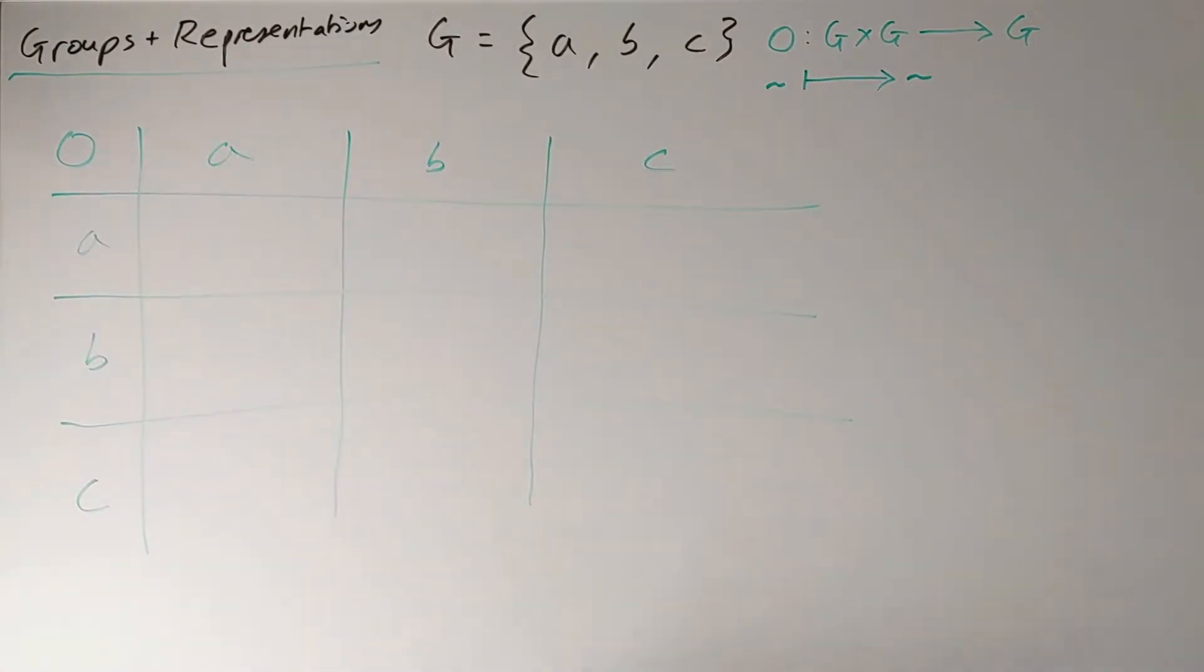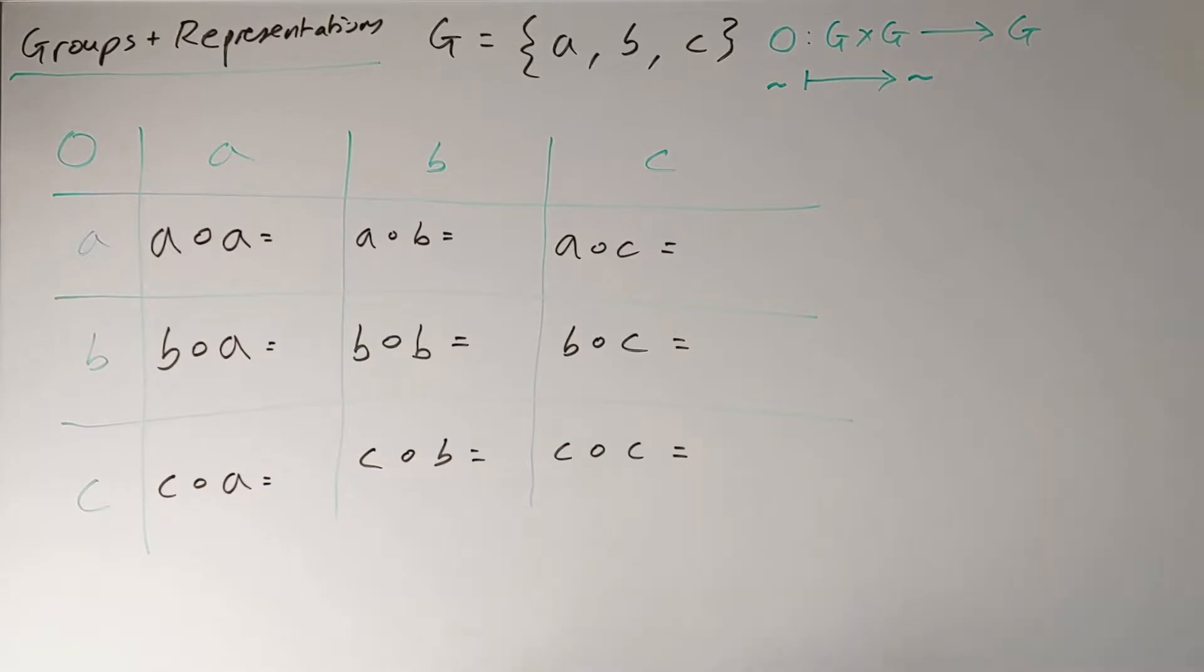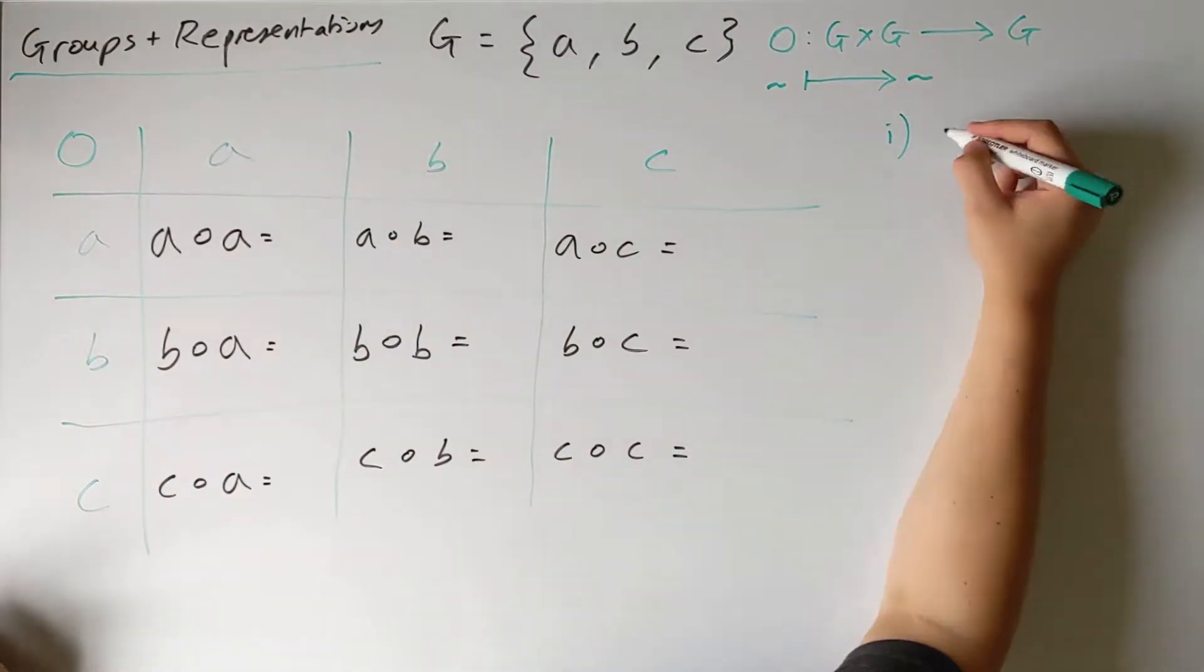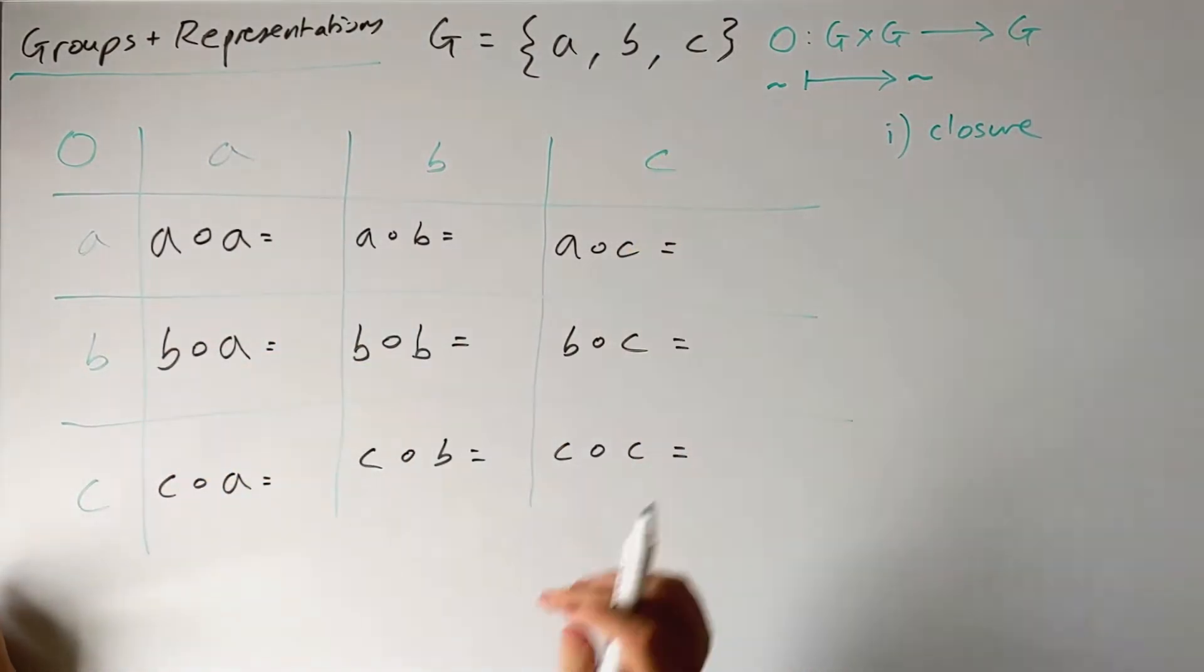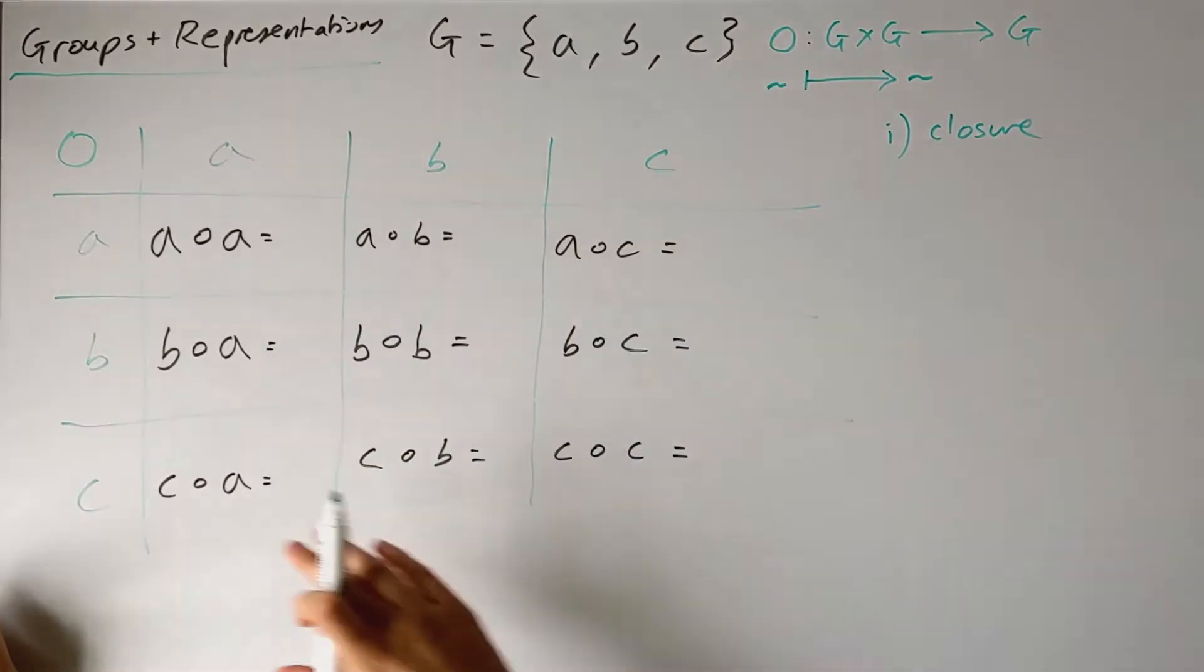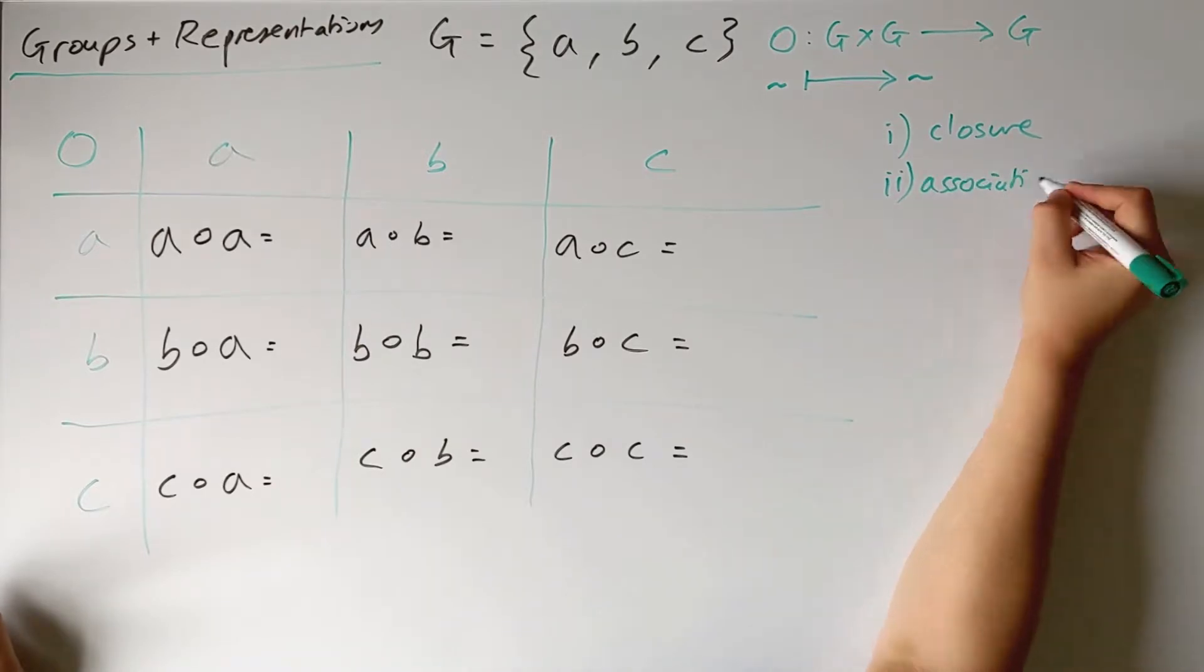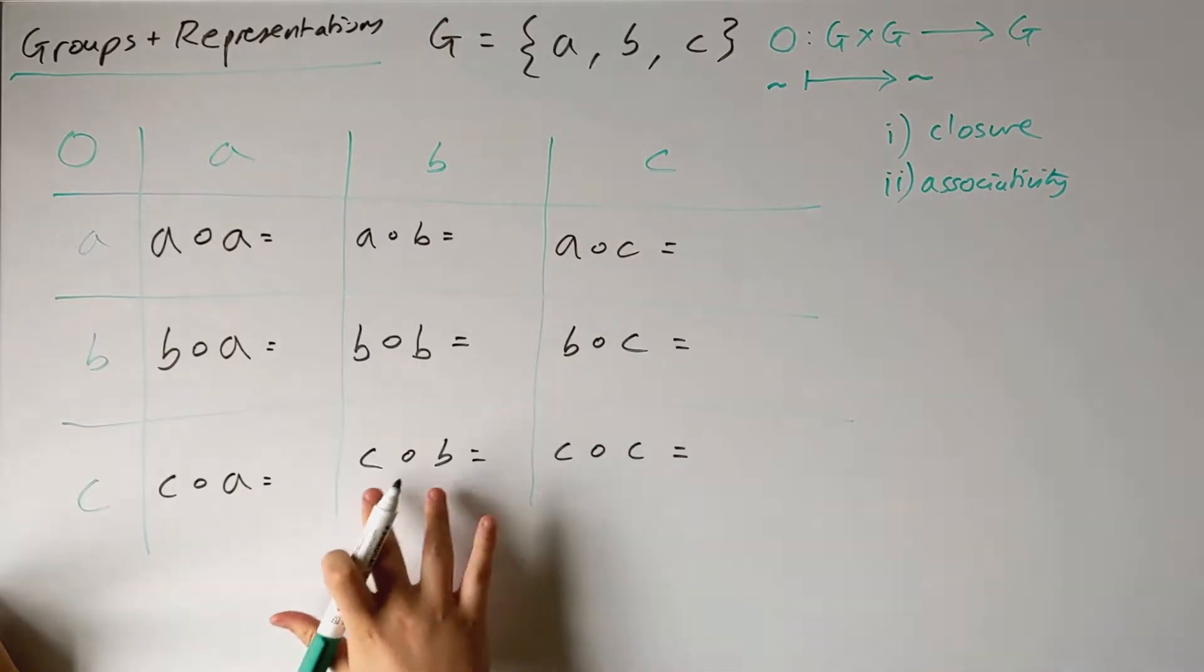When we're constructing this composition table, we need to remember to adhere to the group axioms. If we recall, they were: closure, meaning that we can only map elements in the group to other elements in the group, so anything I write down here can only be a, b, or c. Secondly, we had associativity. We won't actually need to worry about that in this case since we're only considering the composition of two elements.